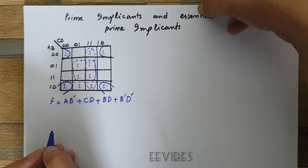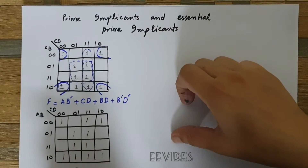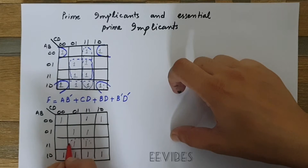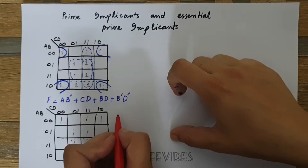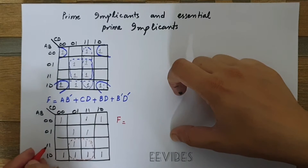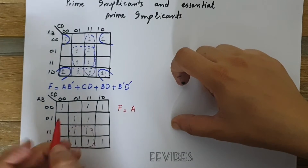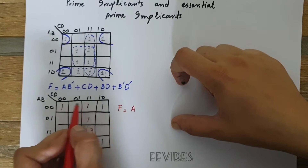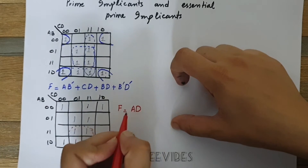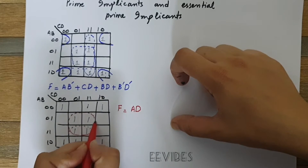Now let's see another possible combination. We combine these four adjacent squares where A remains constant at one, B changes from one to zero so we don't write B, and the first term is written as A. Switching columns, C changes from zero to one so we don't write C, and D remains one. Hence the first term is AD.